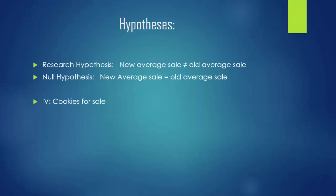Here are our variables for this example. The independent variable is cookies for sale. The dependent variable is purchase price. Our first step is to figure out the mean needed to reject the null hypothesis. In order to do this, we are going to do a z-test.